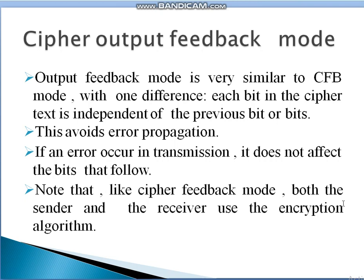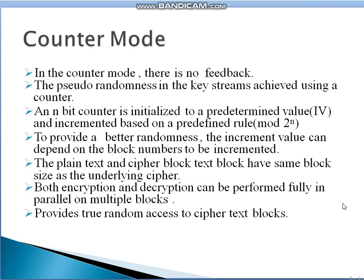Note that like Cipher Feedback mode, both the sender and receiver use the encryption algorithm. The last mode is Counter mode. In Counter mode there is no feedback; instead, randomness is achieved using a counter. An n-bit counter is initialized to a predetermined initialization vector value and incremented based on predefined rules up to 2 to the power of n. Both encryption and decryption can be performed fully in parallel on multiple blocks, providing better randomness and random access to ciphertext blocks.